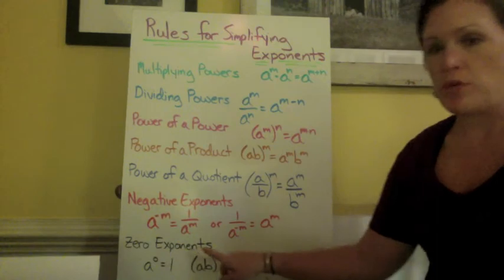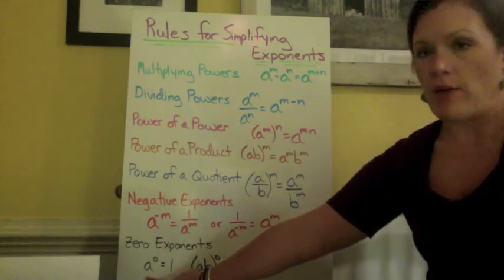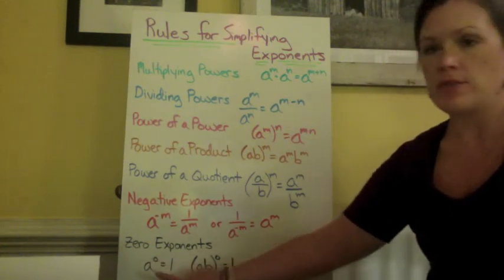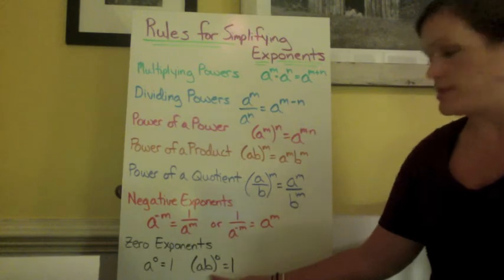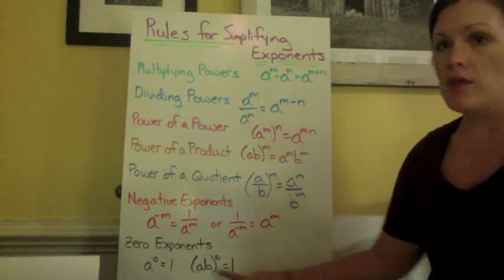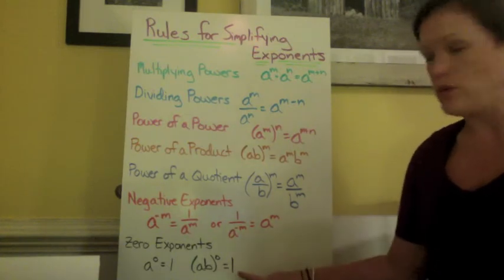The zero exponents simplify rather easily. Anything to the zero power is equal to 1. So a to the zero power is equal to 1. The product of a times b to the zero power would be equal to 1. The product, if it's all grouped together to the zero power, would all equal 1.